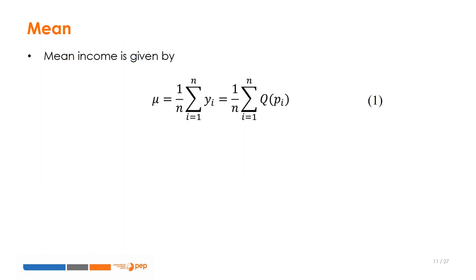The mean income is another word for the average income of a population. Formally, it is equal to the total income of the population — the sum of yi from i equals 1 to n — divided by the size of the population n. As we saw earlier, income yi is equivalent to the quantile corresponding to pi.